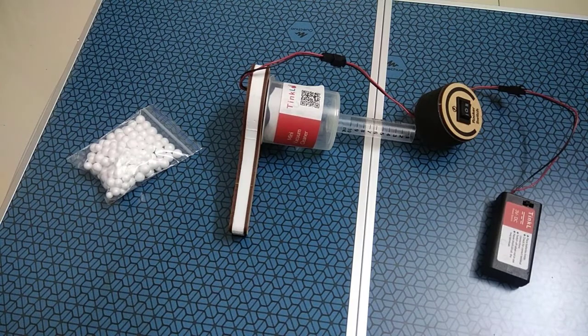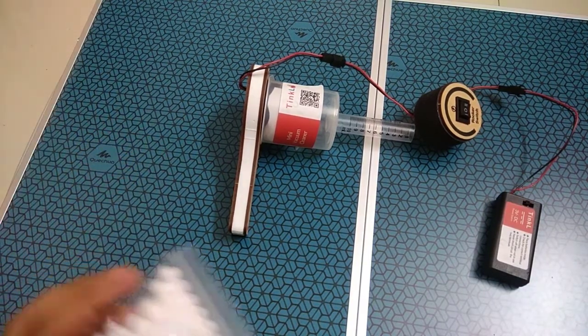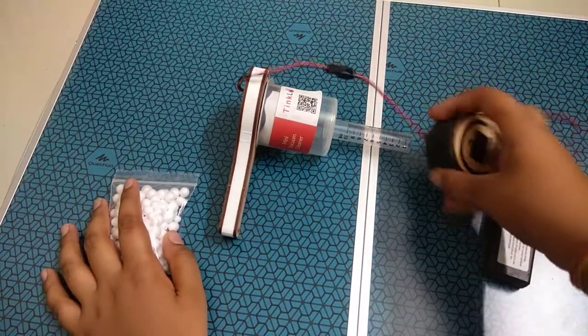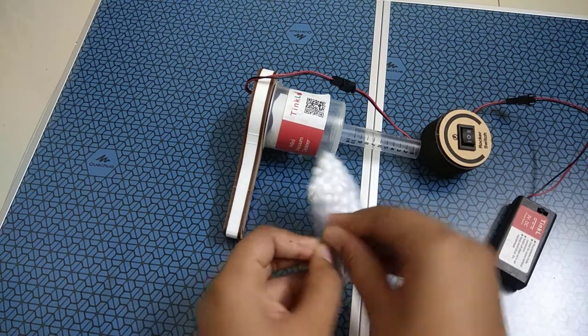Now the mini vacuum cleaner is ready. Now switch on the rocker switch and bring it near thermocol balls.